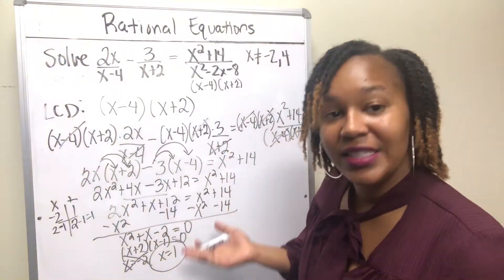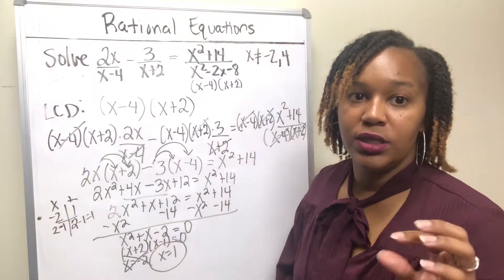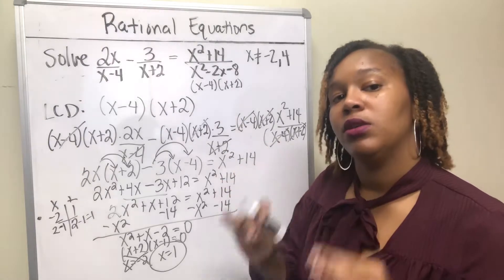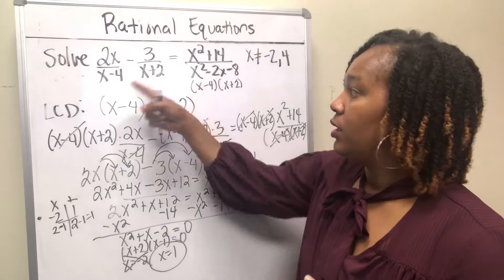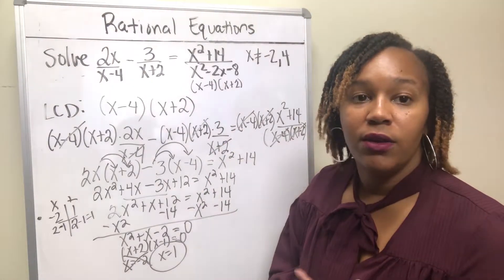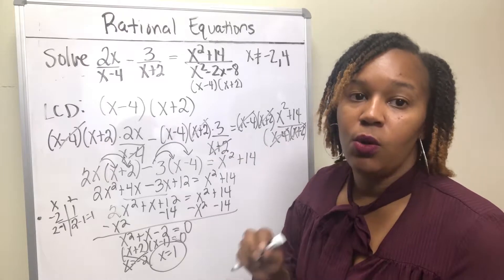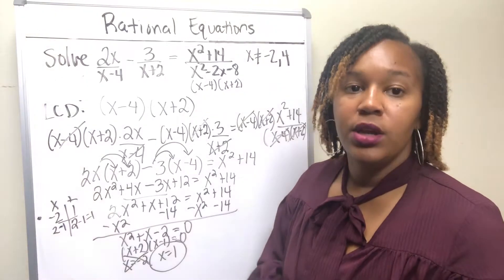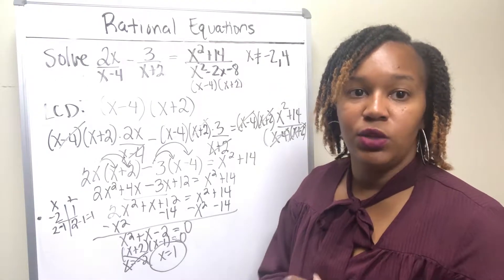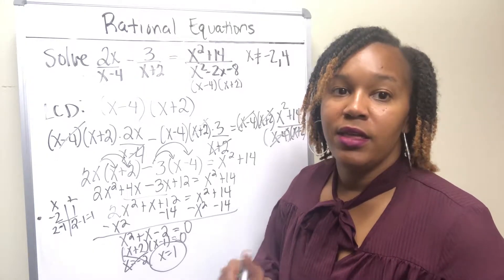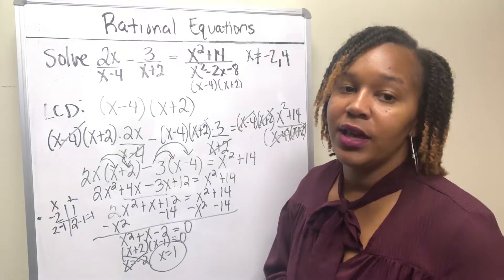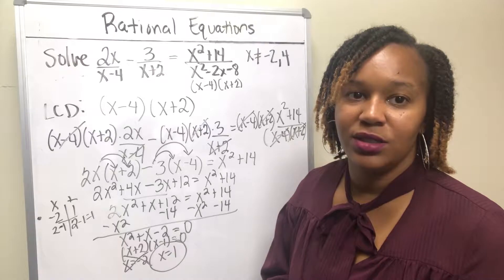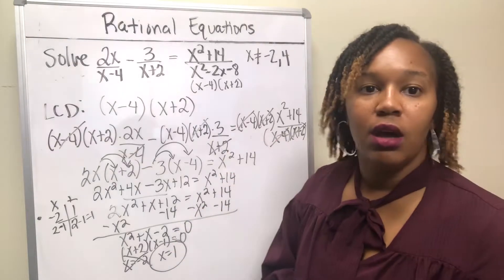There are a lot of steps, but if you break it down and do it step by step it'll make more sense. First, factor any denominators that can be factored. Second, find your restrictions — what can x not be, what would make the denominator zero? Third, find your least common denominator, which will help you eliminate the fractions by multiplying everything by it. Then solve the resulting equation. And the very last thing — go back and check whether any of those solutions were in your restrictions. That is how you solve a rational equation.